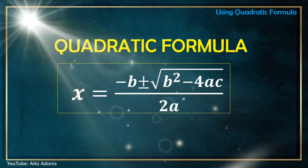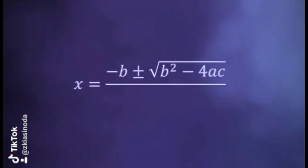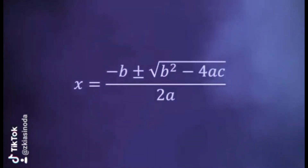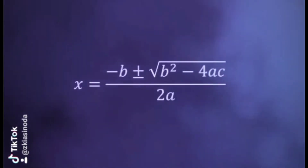So class, let us all sing! x is equal to negative b, plus or minus the square root of b squared minus 4ac, all over 2a.